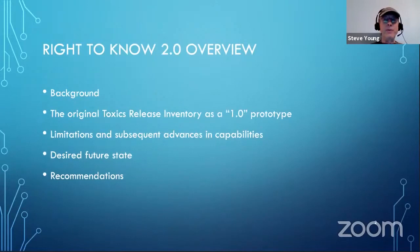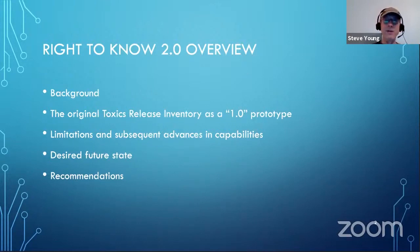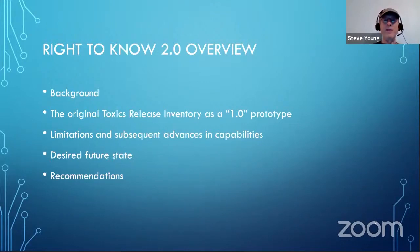Just a quick overview of what I'm going to talk about. I'm calling it Right to Know 2.0, and I will explain that. A bit of background: the original Toxics Release Inventory could be thought of as sort of like a 1.0 prototype. I'll talk about the limitations that existed back in the eighties, what it was originally created for, and the advances we've seen since, which are increasing.